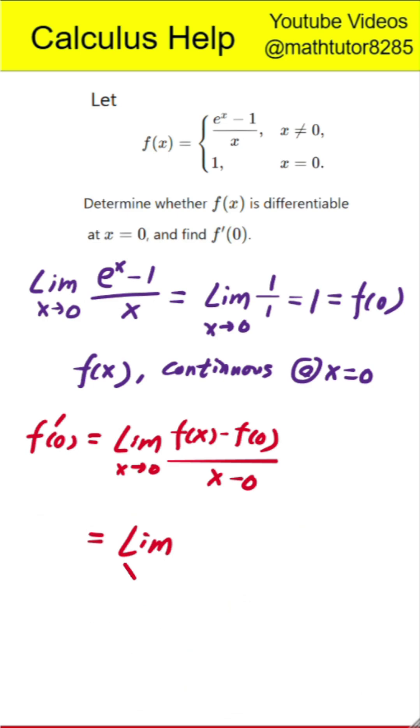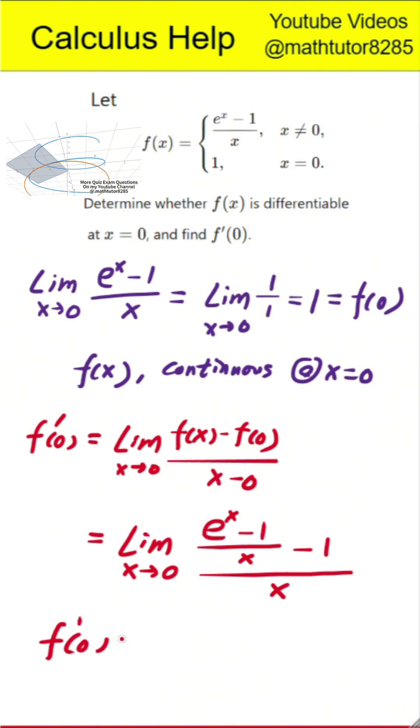That means we look at the limit of the expression, the quantity e to the x minus 1 divided by x minus 1 divided again by x. Simplifying the numerator gives e to the x minus 1 minus x.